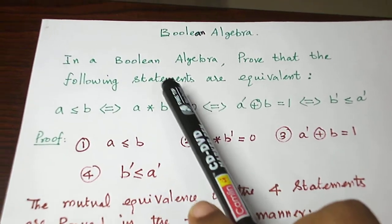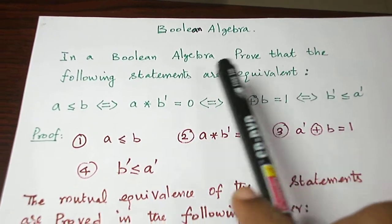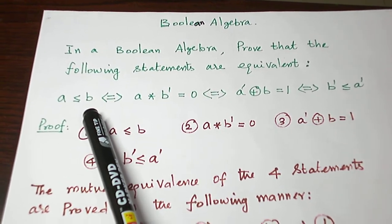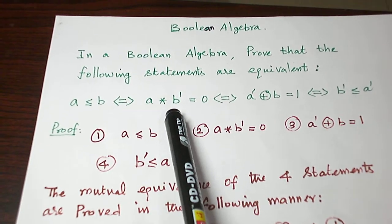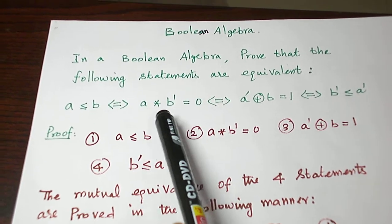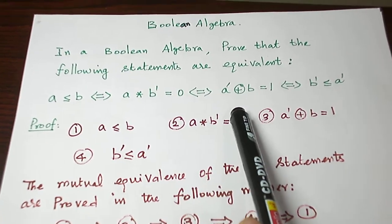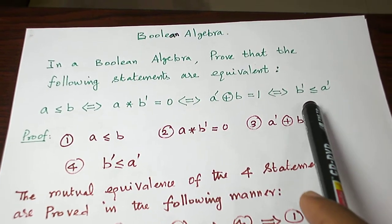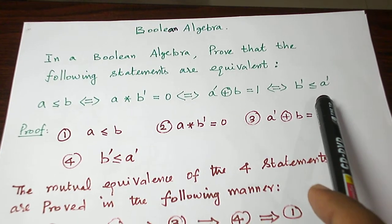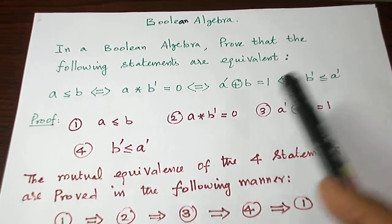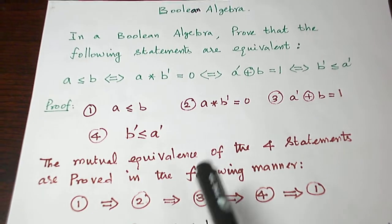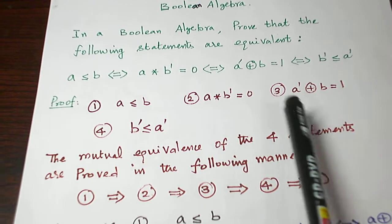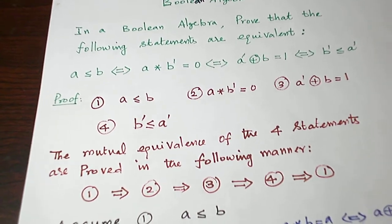This is a problem. In a Boolean algebra, we are asked to prove that the following statements are equivalent. First statement is A less than or equal to B. Second statement is A star B dash is equal to 0. Third statement is A dash plus B equal to 1. Fourth statement is B dash less than or equal to A dash. These are the four statements we are asked to prove, and we need to prove their mutual equivalence.